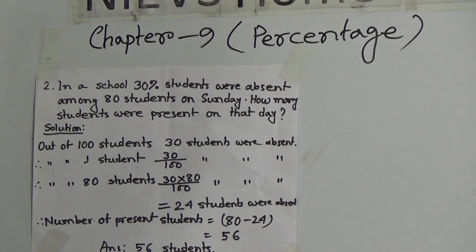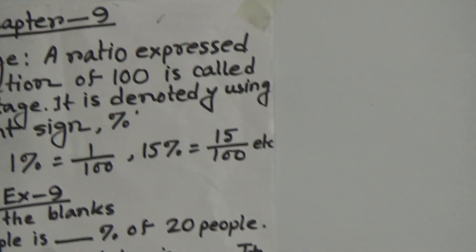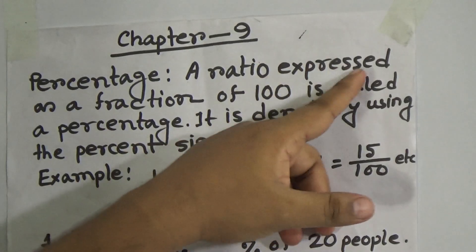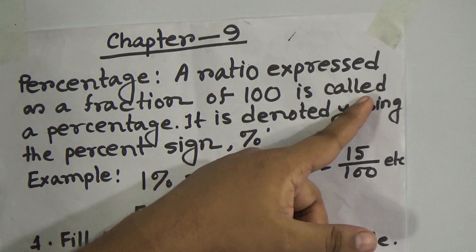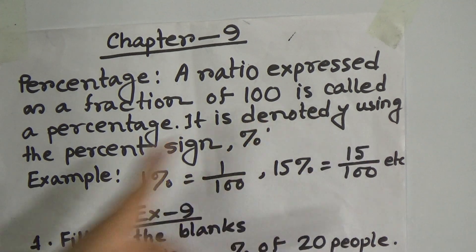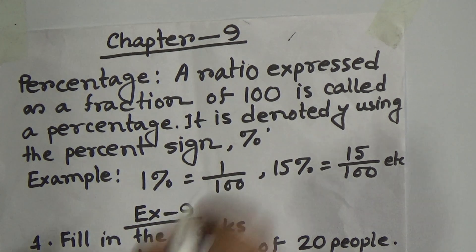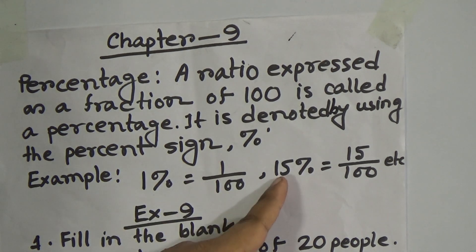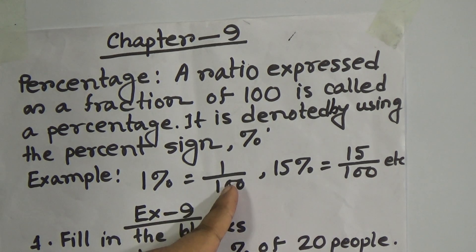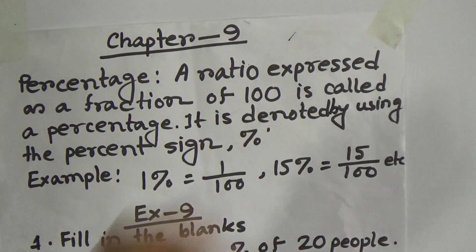Here you notice chapter 9. The name of the chapter is 'Percentage.' In order to solve this chapter, at first we need to know what is percentage — that means the definition of percentage. Please notice: chapter 9, Percentage. A ratio expressed as a fraction of 100 is called a percentage. It is usually denoted by the percent sign. So 1 percent means 1 by 100, and 15 percent means 15 by 100. Here the denominator is 100, so it is called a fraction.